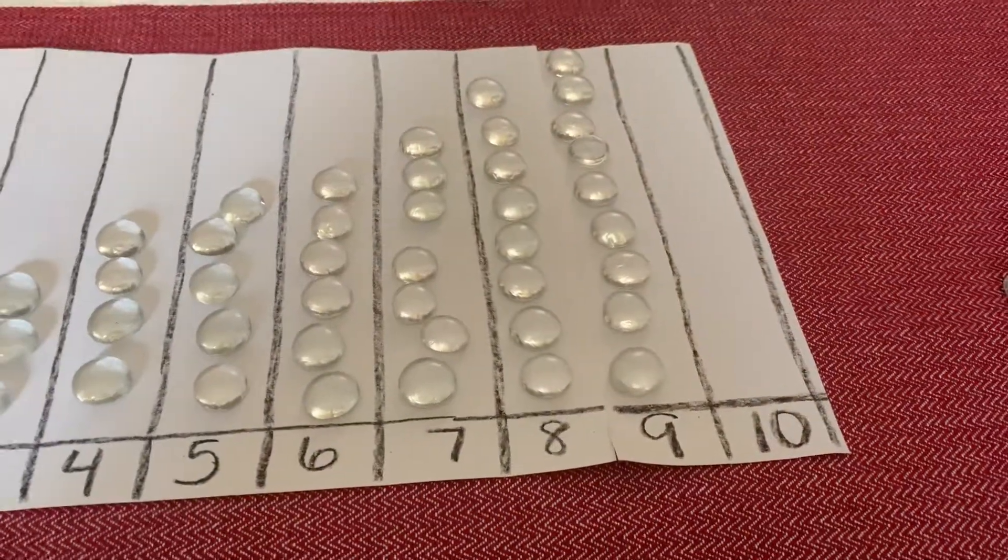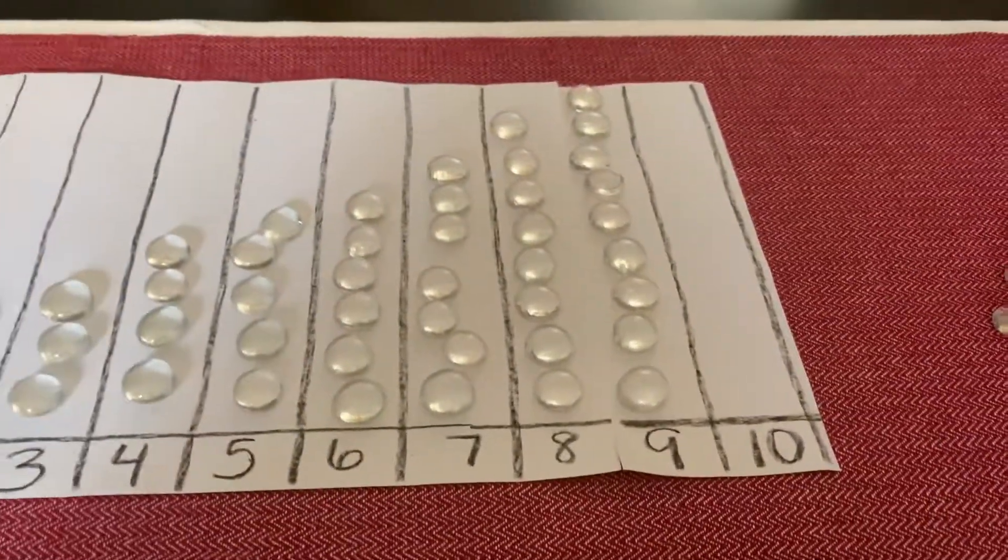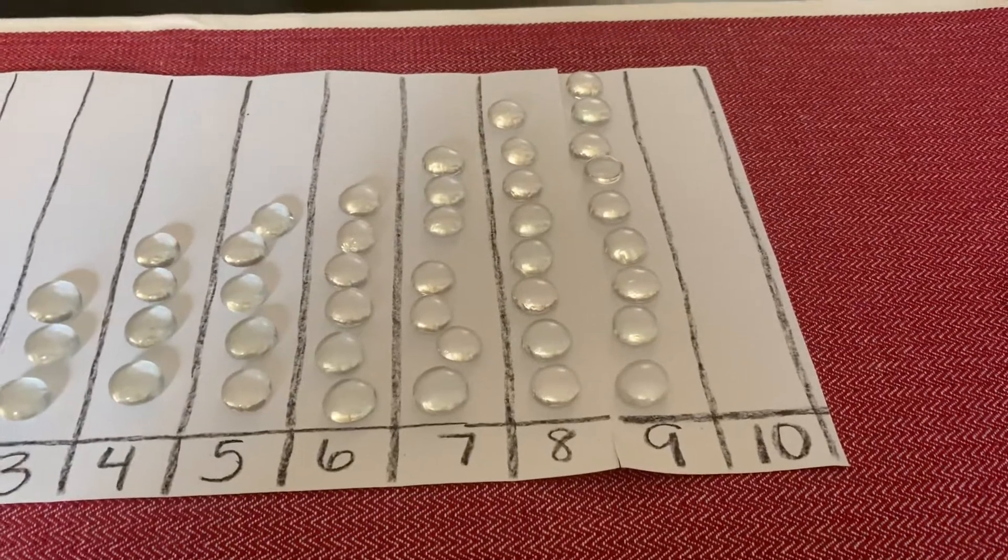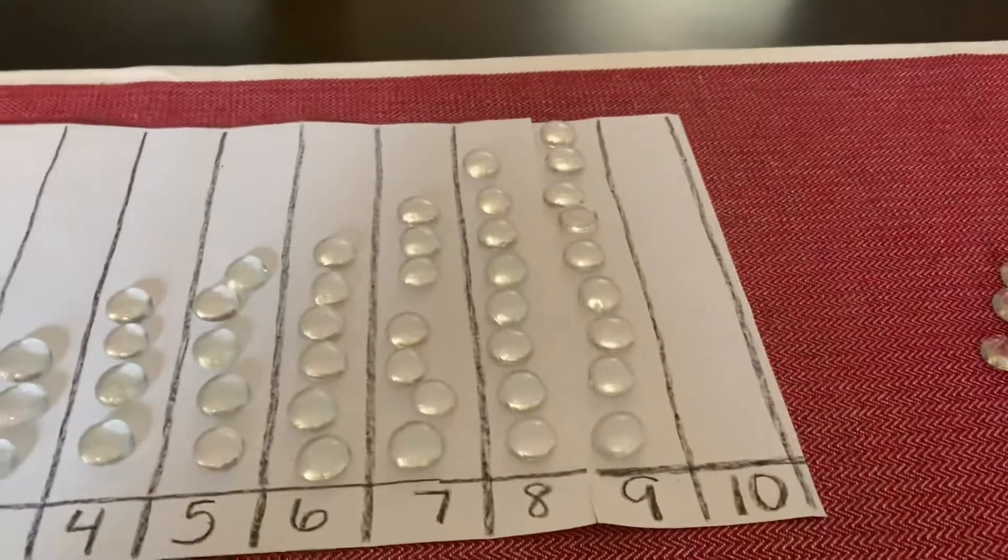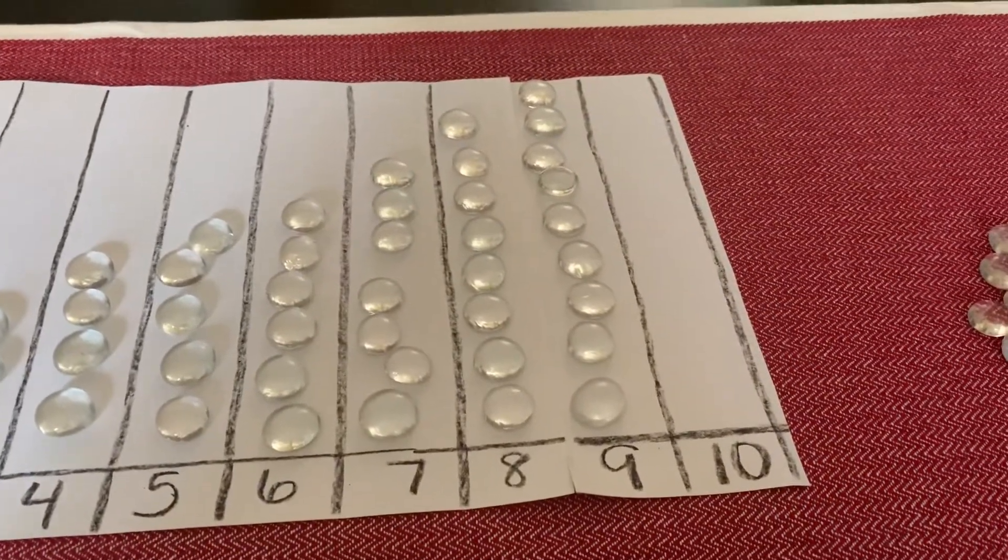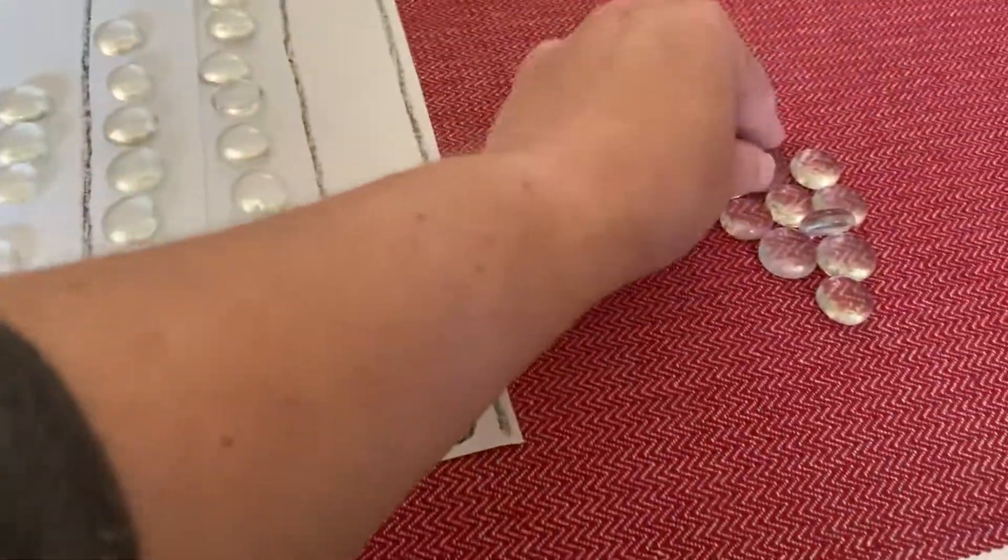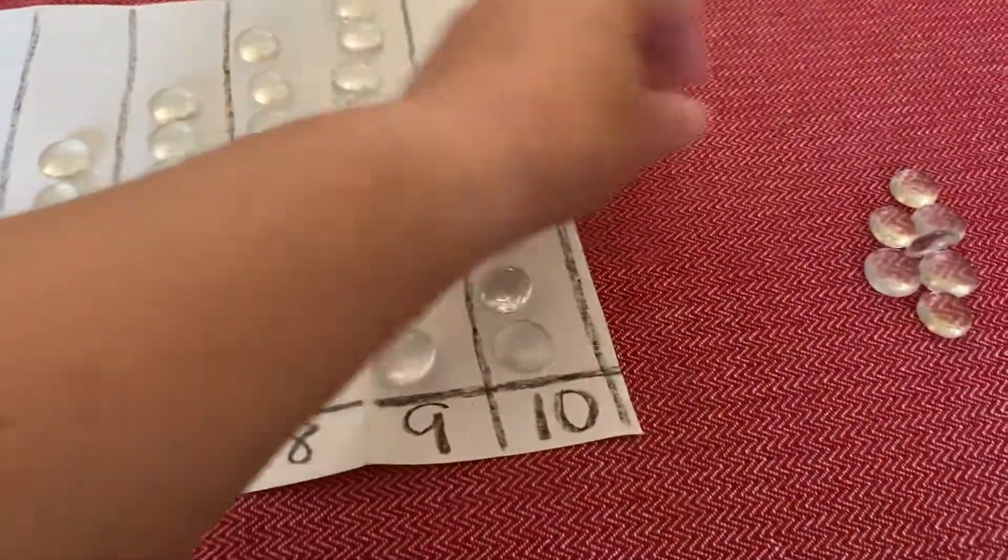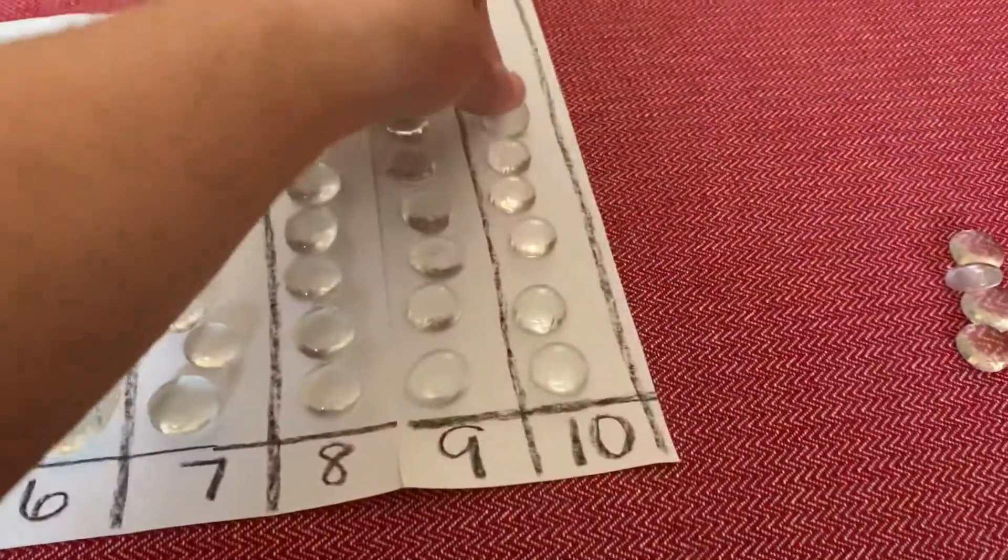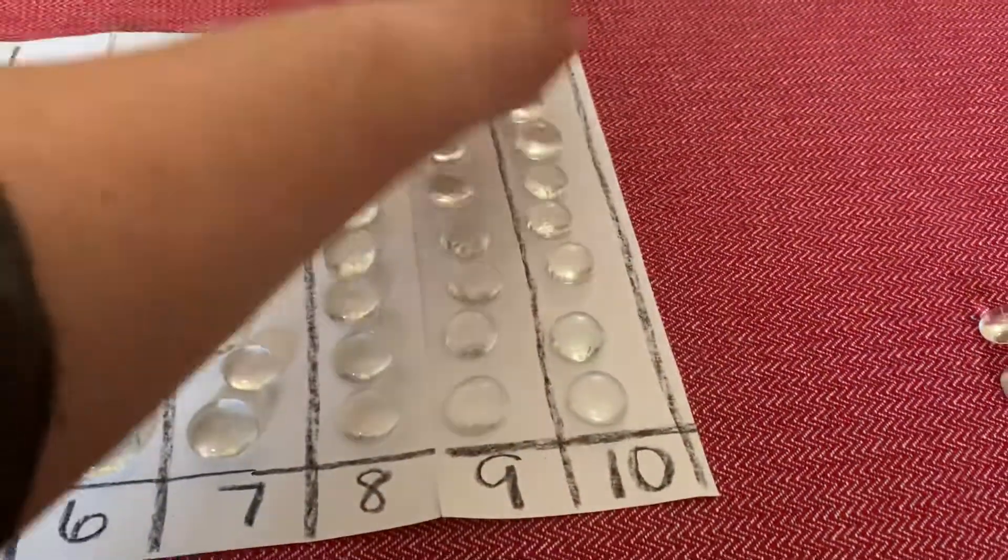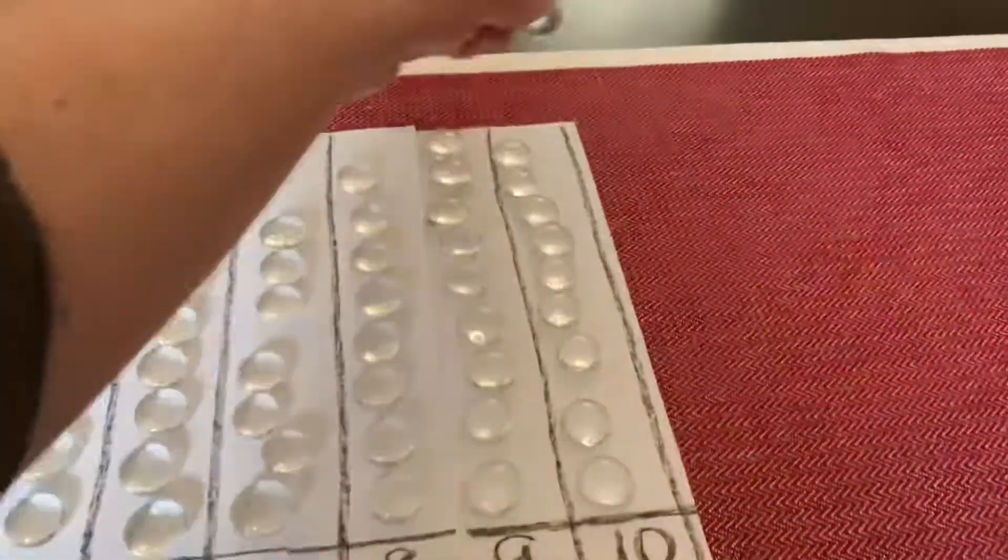All right boys and girls, what's our last number? That's right, the number 10, which is also known as a double digit because it has two numbers. It has a 1 and a 0, and that is what we call a double digit. Here we go boys and girls, let's count. Ready? 1, 2, 3, 4, 5, 6, 7, 8, 9, 10.